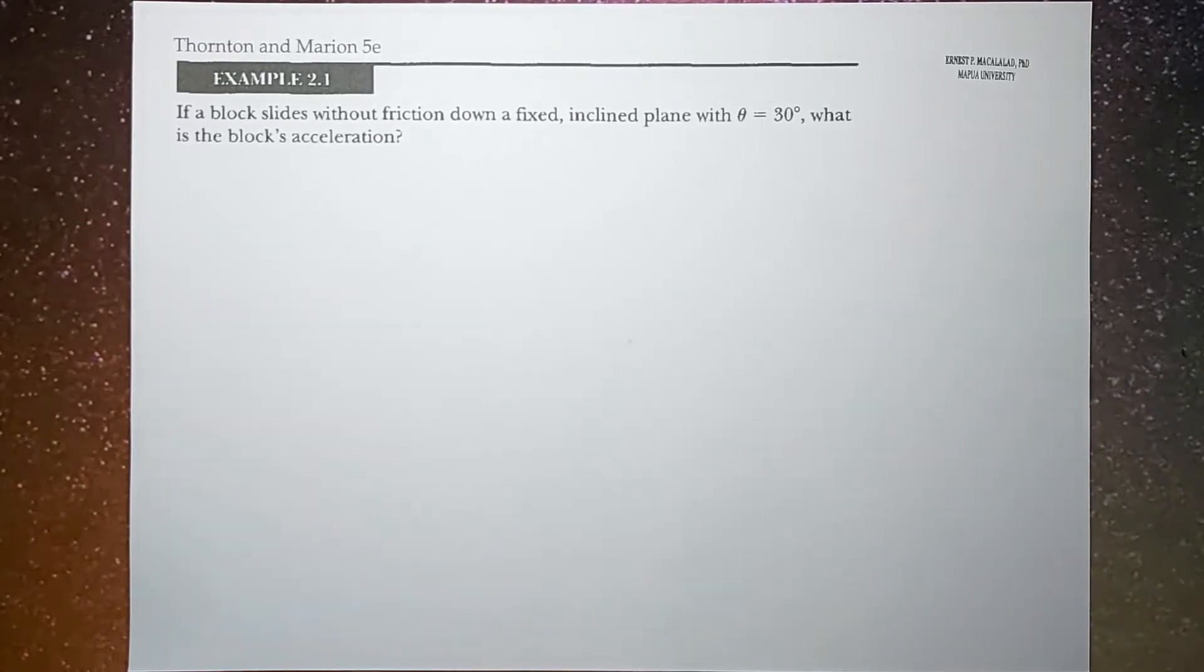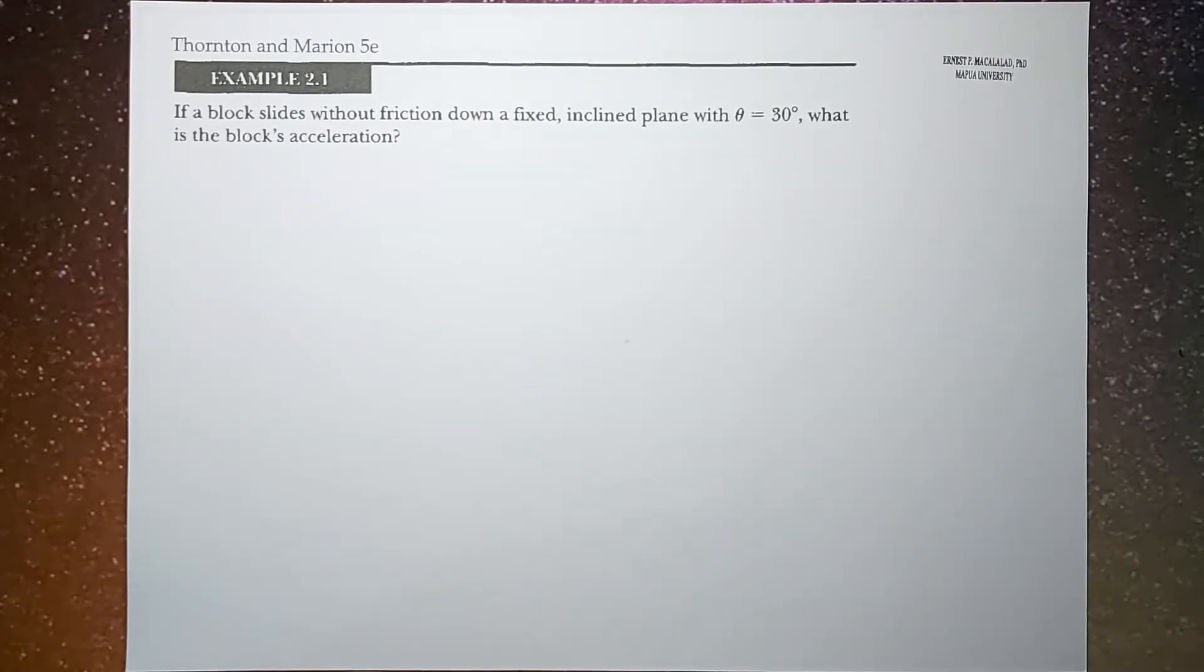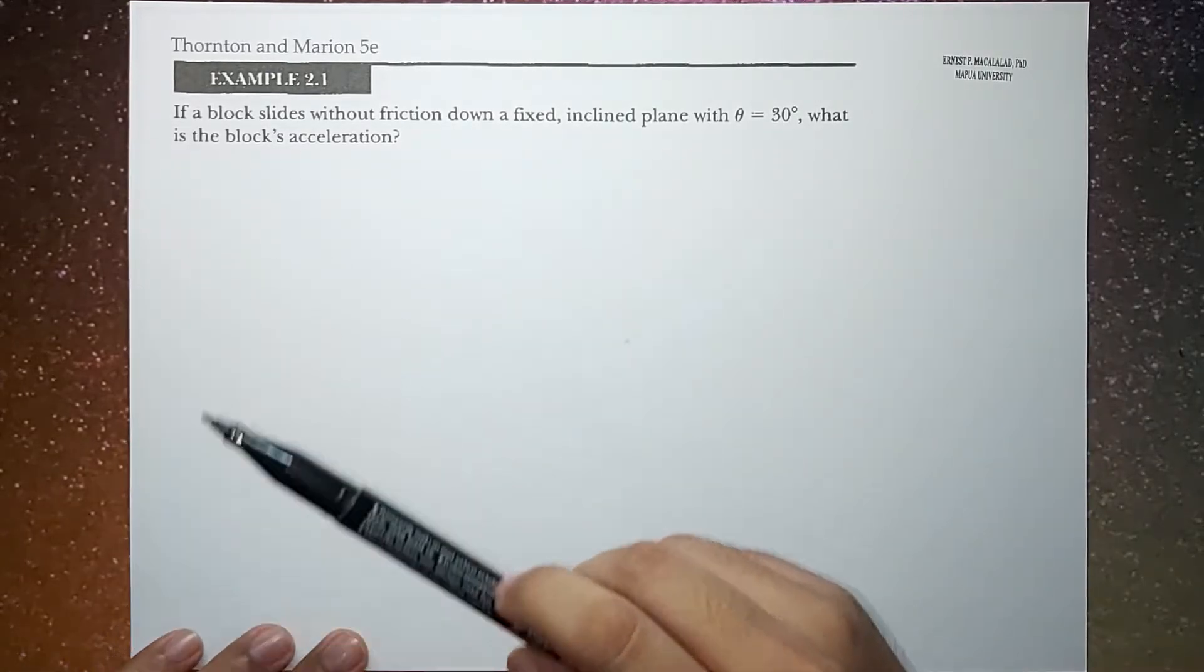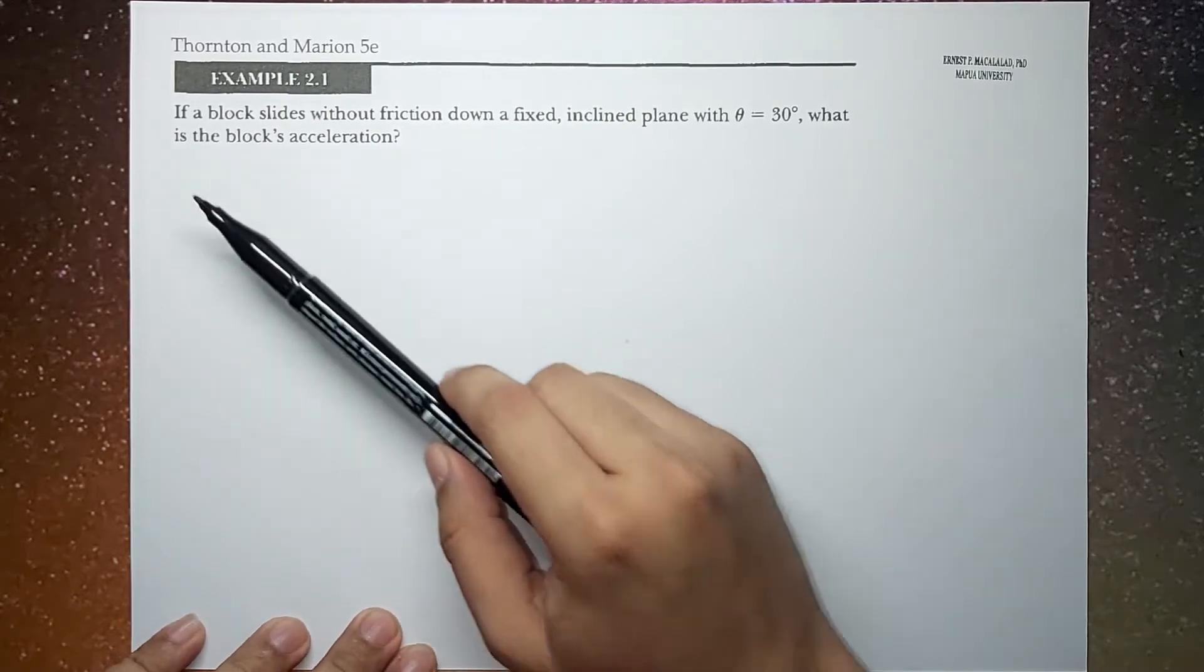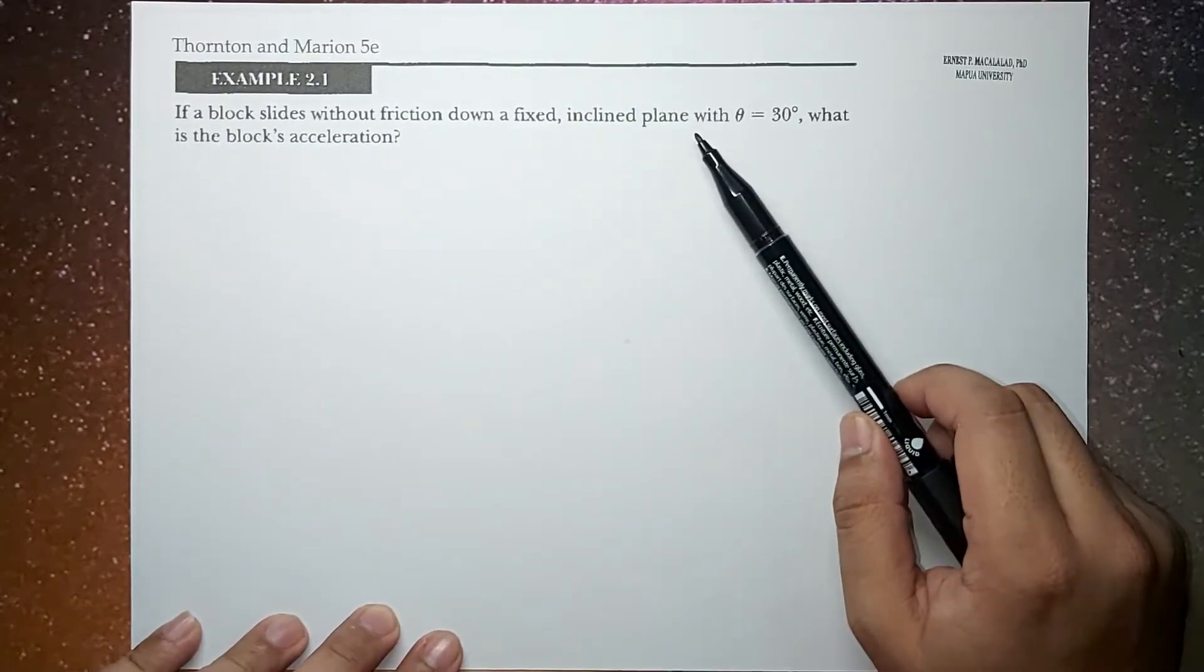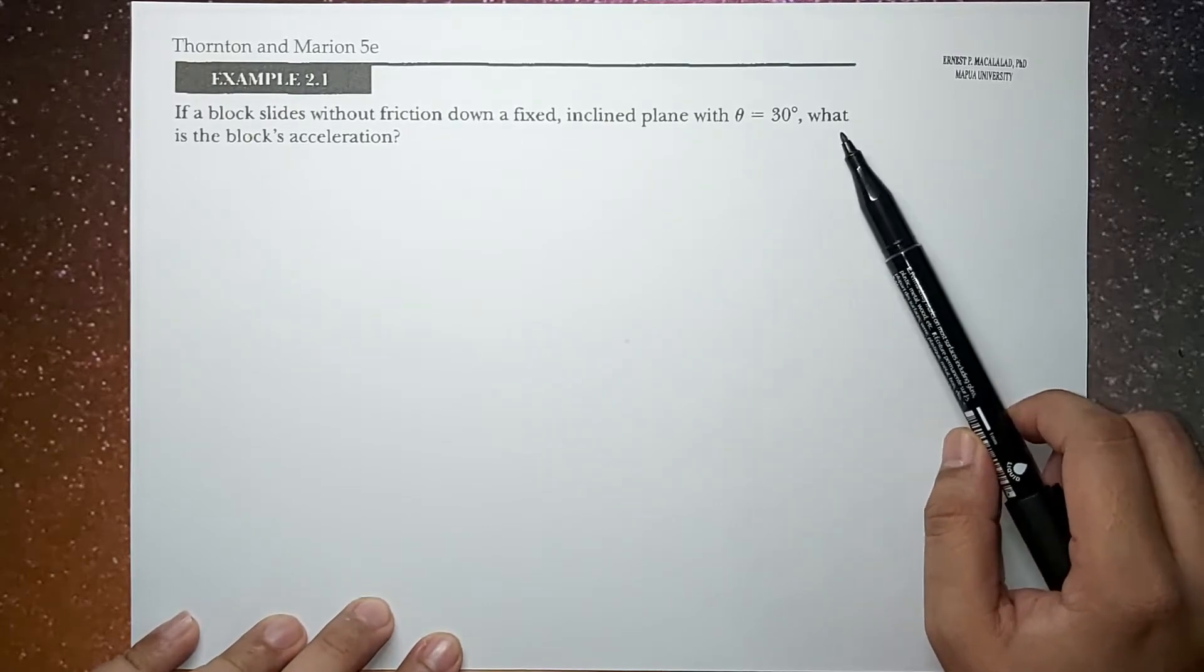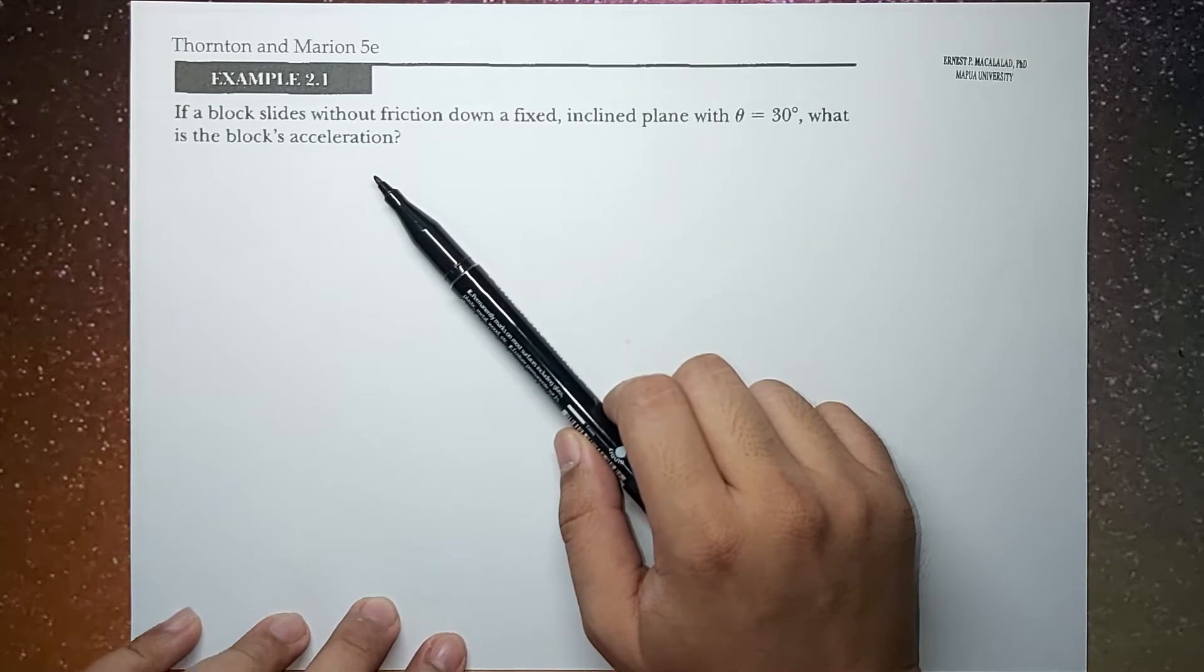What's up, guys? It's me, Sir Ernest, and today we're going to have example 2.1 of Thornton and Marion 5th edition. The problem reads, if a block slides without friction down a fixed inclined plane with angle theta equals 30 degrees, what is the block's acceleration?